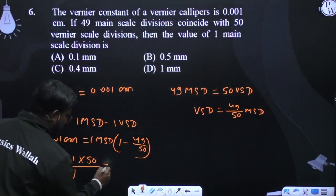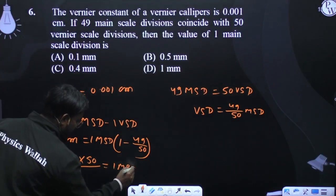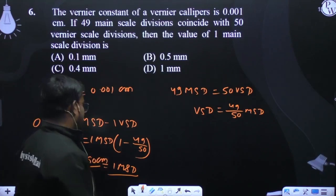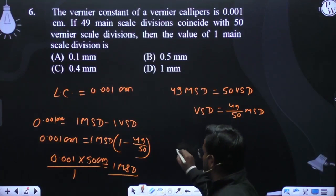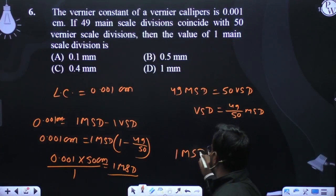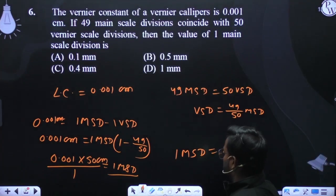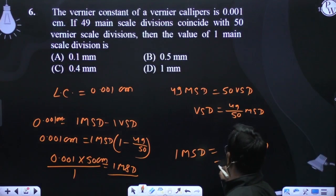This gives us 1 MST equals 0.001 into 50. The value of one main scale division is 0.001 into 50.